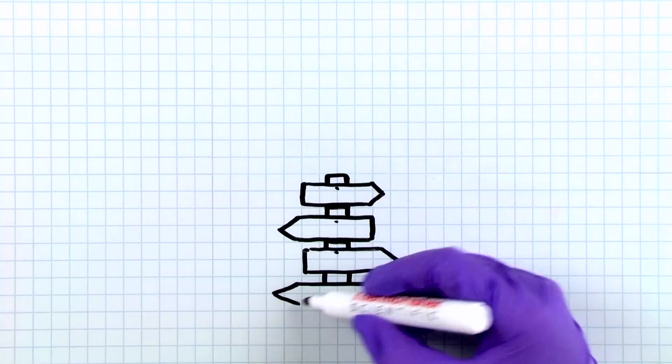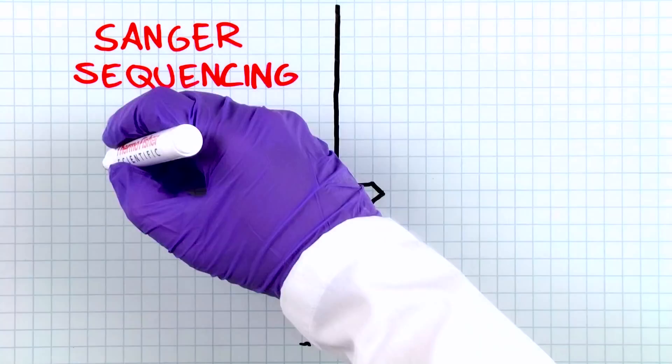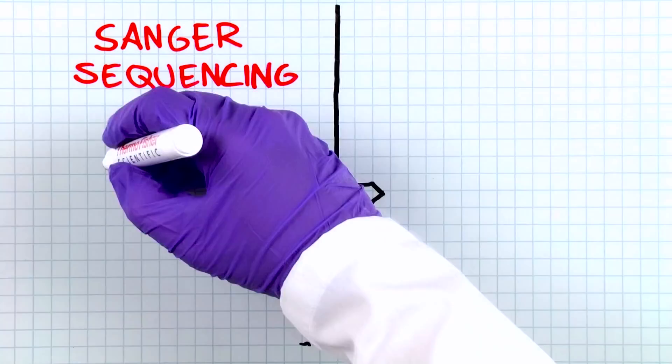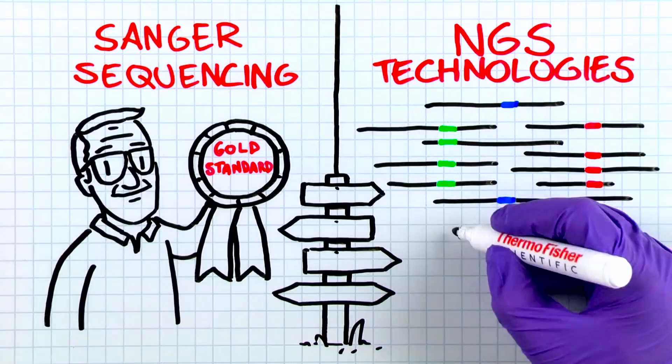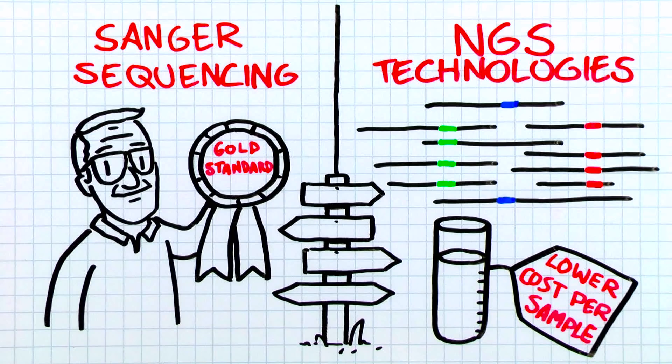Researchers today have many choices when deciding which sequencing technology to use for their clinical research. Sanger sequencing, with 99.99% accuracy, is the gold standard for clinical research sequencing. However, newer NGS technologies are becoming common in clinical research labs due to their higher throughput capabilities and lower cost per sample. But which one should you use — Sanger or NGS? Here is what you have to consider.